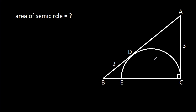In this video, we have been given a semicircle inside a right angle triangle, and AC is 3, BD is 2. We have to find the area of the semicircle.